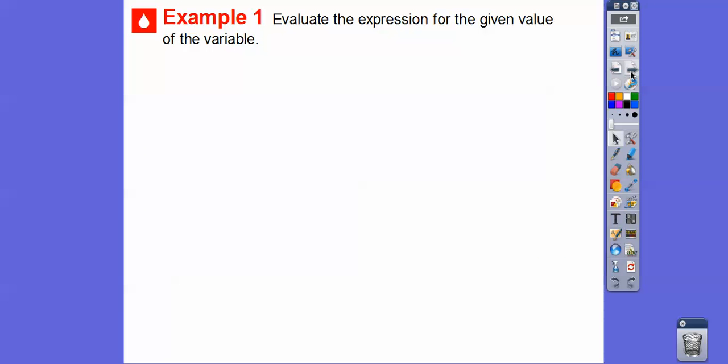So evaluate the expression for the given values of the variables. And this is example one. So 4 times m minus 8 divided by 3 when m equals 14. So we're going to go ahead and substitute in 14 right there. So 14 minus 8 right there.